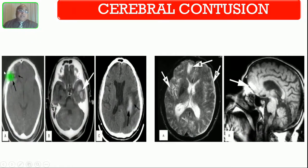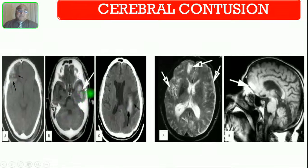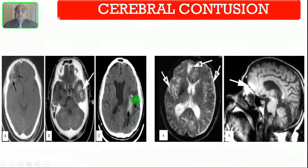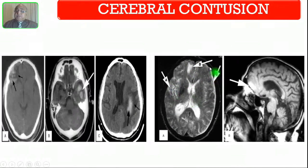Here you are seeing frontal lobe contusion, and here temporal lobe contusion with hematoma around it. Here also you are seeing intraparenchymal contusion with hemorrhage around it. This is the coup injury at the direct impact site, this is the contrecoup injury, and this patient is also having a crescent-shaped subdural hemorrhage.